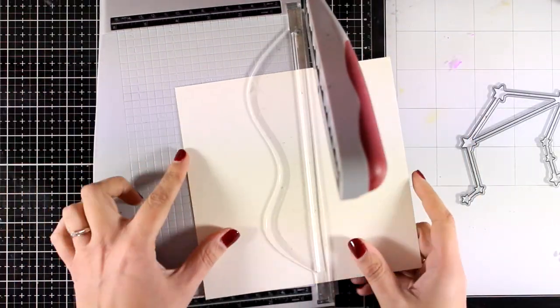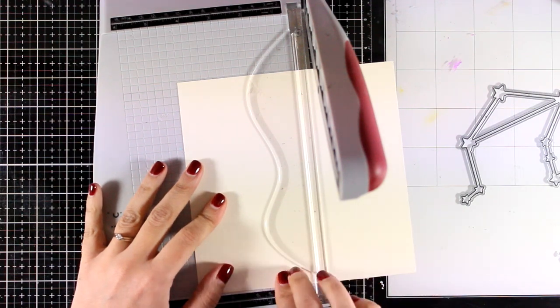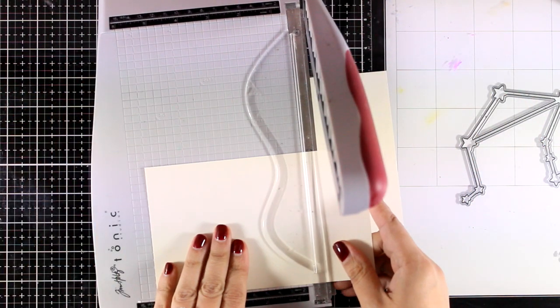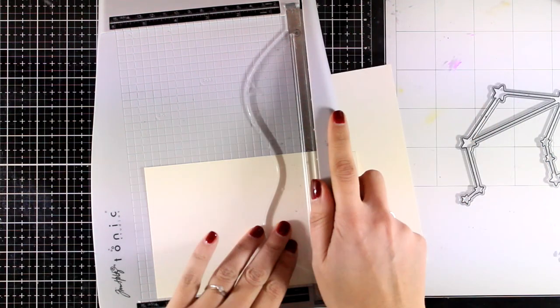So for my card I'm going to cut out a panel that's four and a quarter by five and a half, and it really doesn't matter what color this is. I'm going to completely cover it up. I'm just using a piece from my scraps.